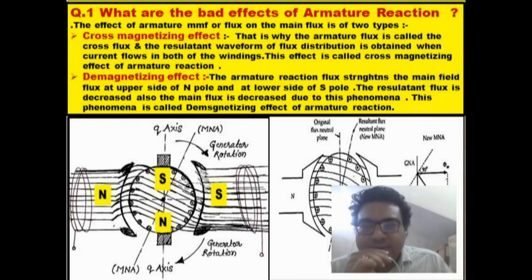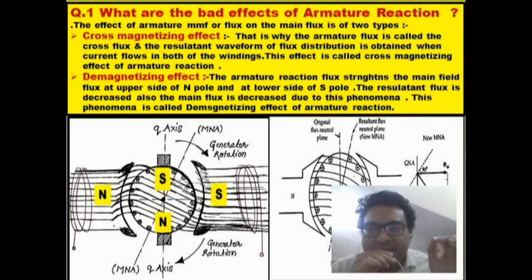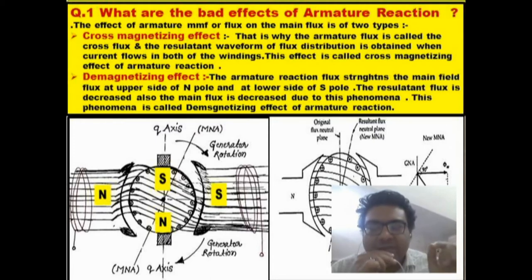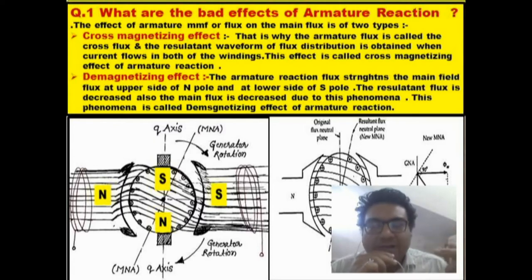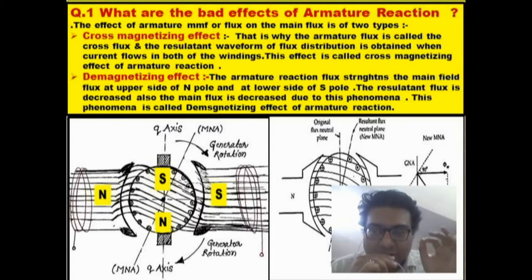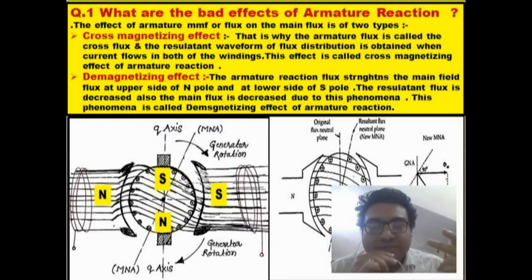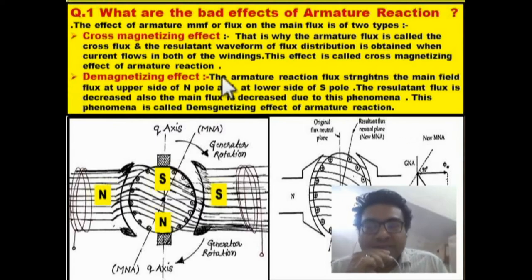The effect of armature MMF or flux on the main field flux is called armature reaction. Due to two major effects, more losses are produced.